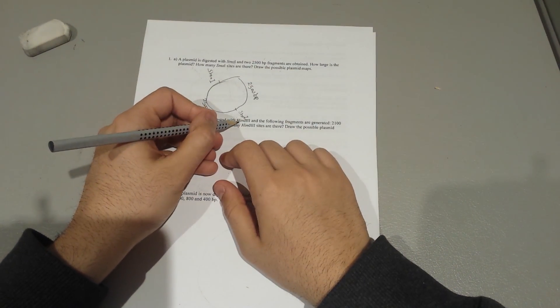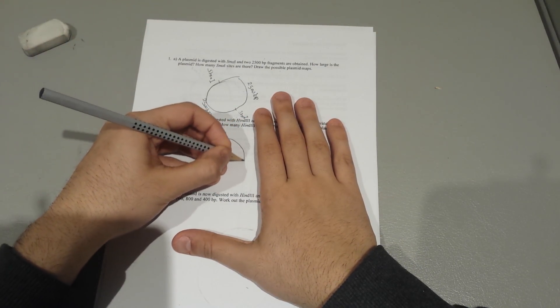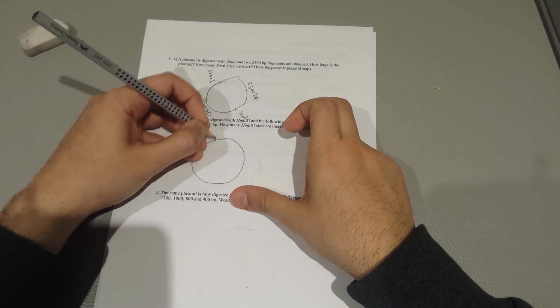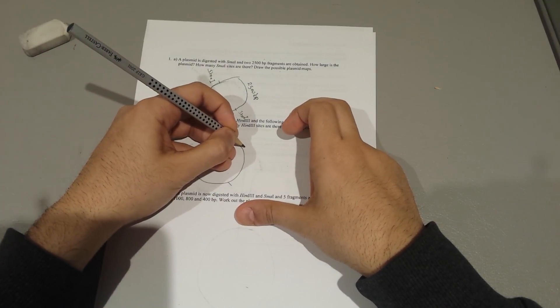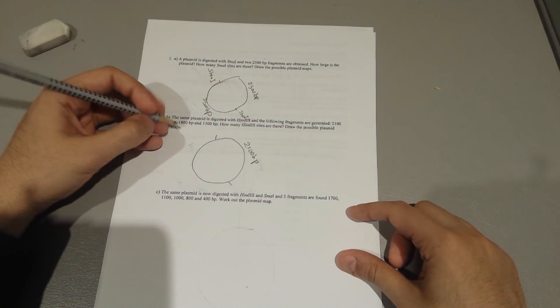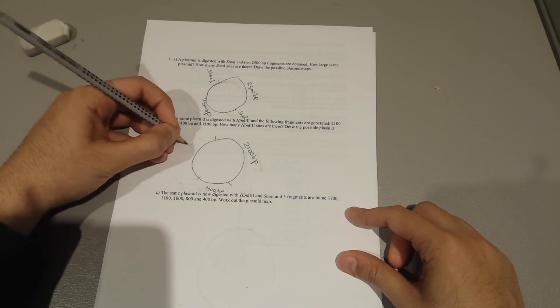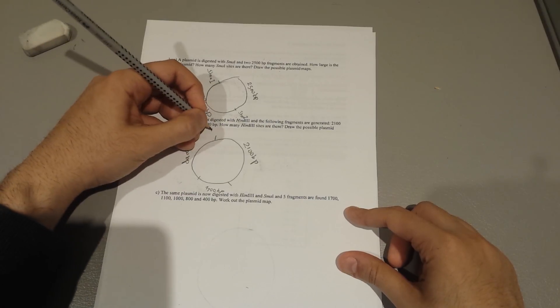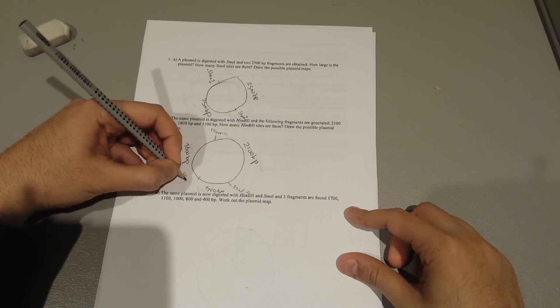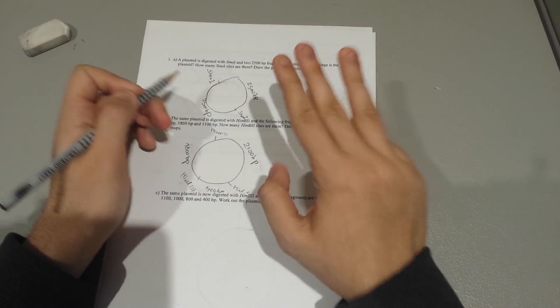In the next one we've been given similar weight but different enzyme this time. We have HIND III - similar function but different specific sequence. So I'm going to find one of them there, then I'm going to make another cut here so that 1100 base pairs would be there and 1800 base pairs would be there.